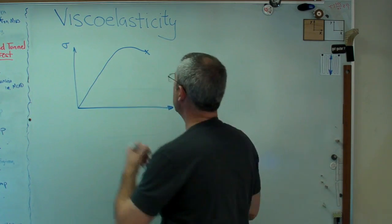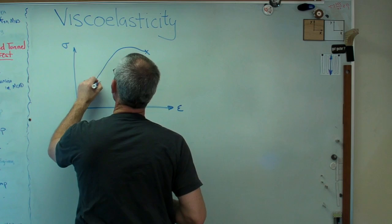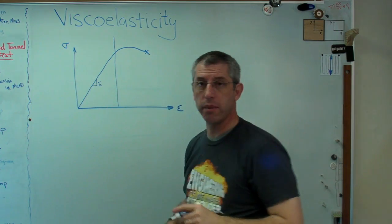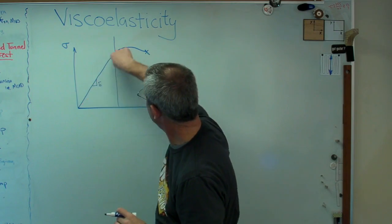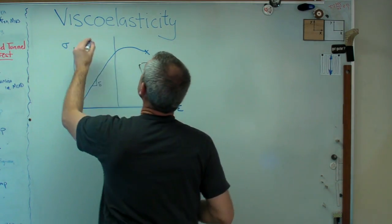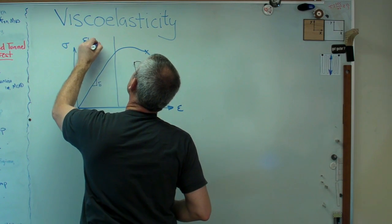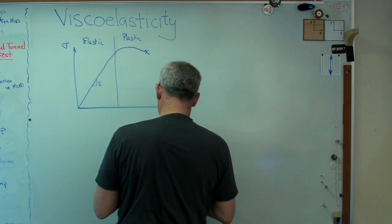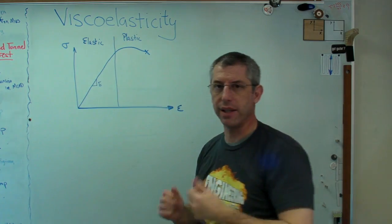That slope there is the elastic modulus E. We always divide this plot into two segments. There's the segment over here where that's a straight line and a segment over here where it's not a straight line. This is the elastic region and this is the plastic region.